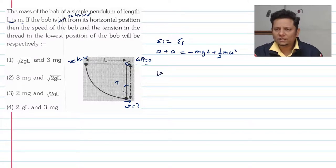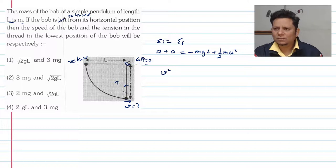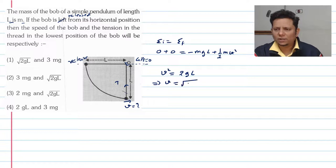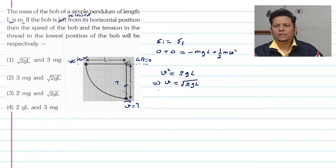Left hand side पर लेने पर, v² = 2gl। m cancel हो जाएगा। Which implies v = √(2gl)। तो आपकी speed यहां पर √(2gl) आ गई।